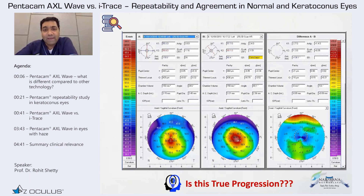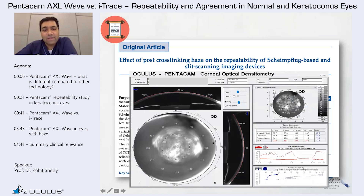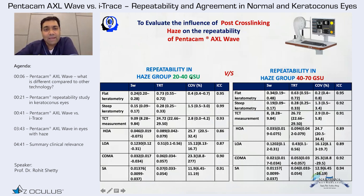The effect of haze is something we have worked on and published — how haze impacts measurements. This is a very useful and underutilized part of Pentacam, especially in cross-linking. We are working on AI models for every level of haze and its impact. We found that different grayscale units of haze have different repeatability, meaning your repeatability changes with the level of haze. The software needs to incorporate this in the future, as it will have a huge impact on cross-linking outcomes.